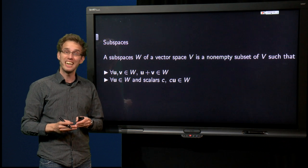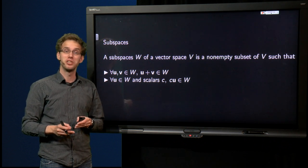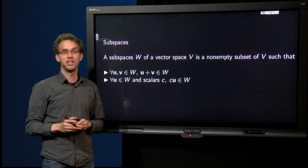If you want to see whether a certain set is a vector space, you have to check 10 axioms. And that is a lot of work.